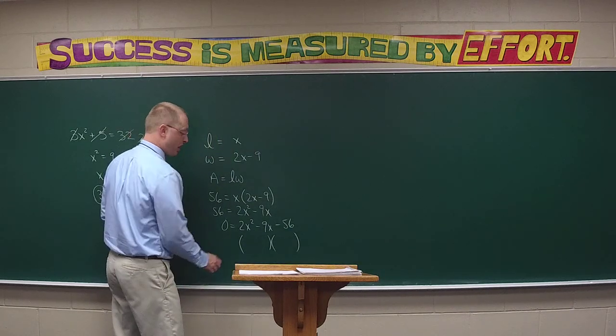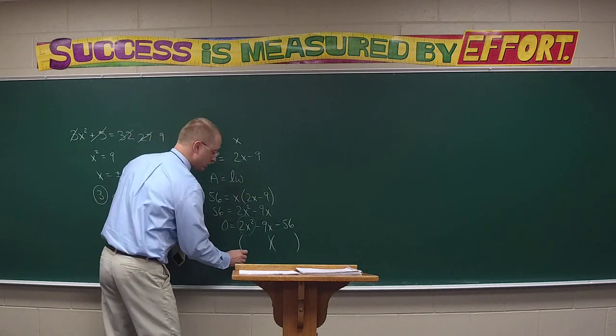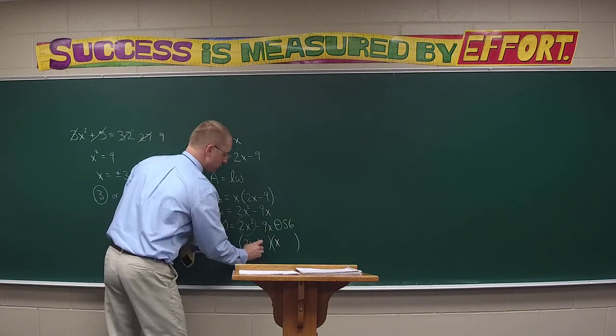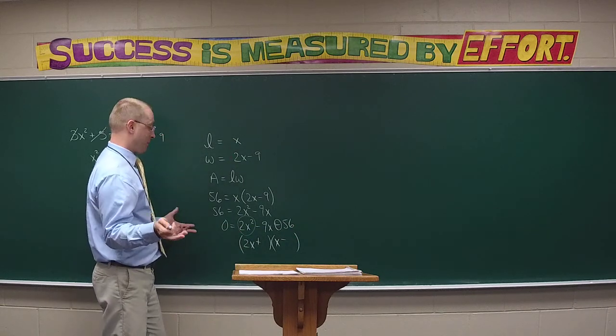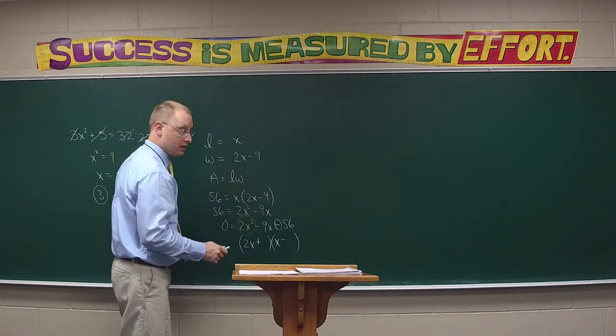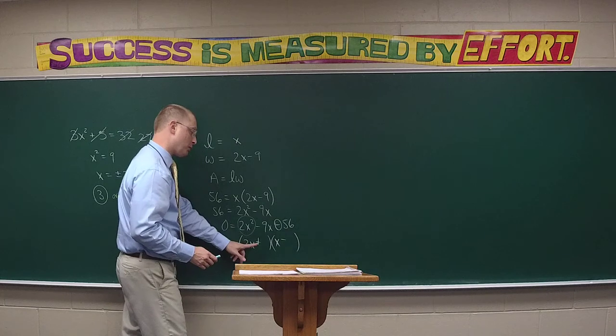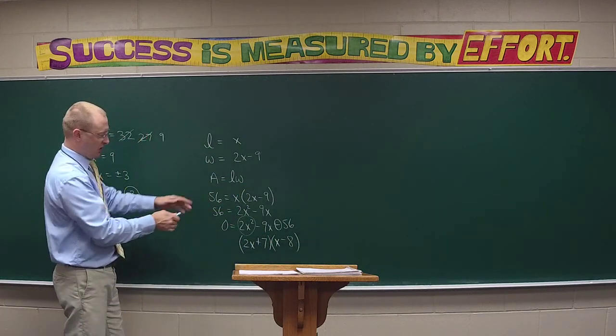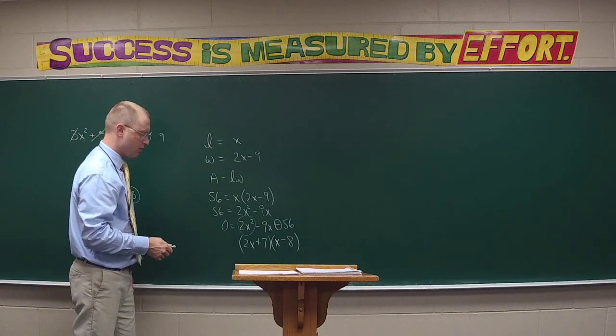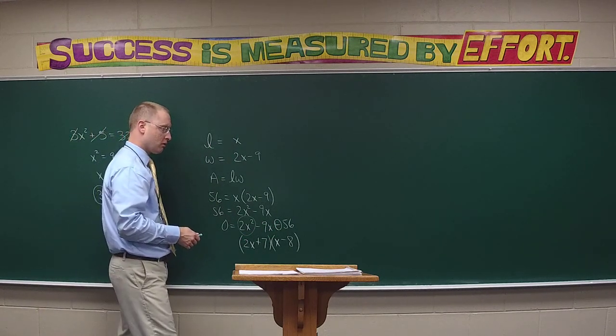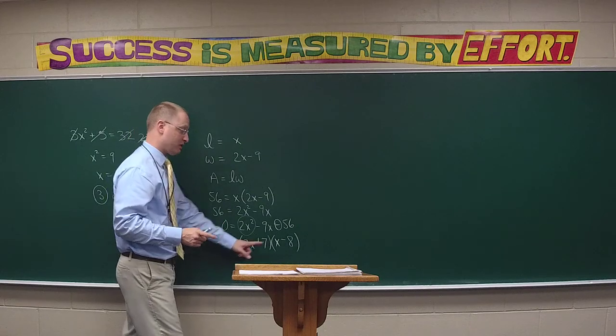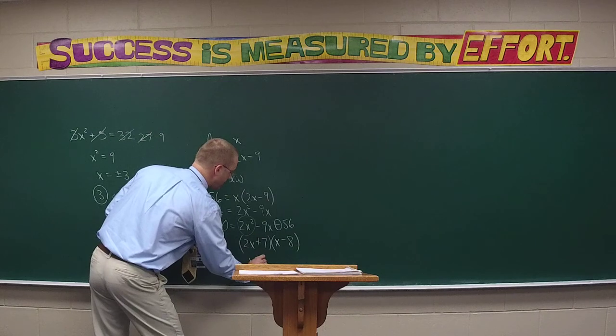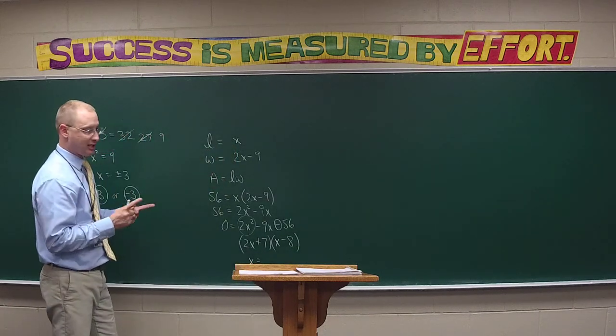The 2x squared will split. The only way I can think of for 56 would be 7 times 8. I don't want to put 8 with the 2 because that would be a common factor. Put 8 here and 7 here. When we check, negative 16 plus 7 gives negative 9, so we got it on the first try.